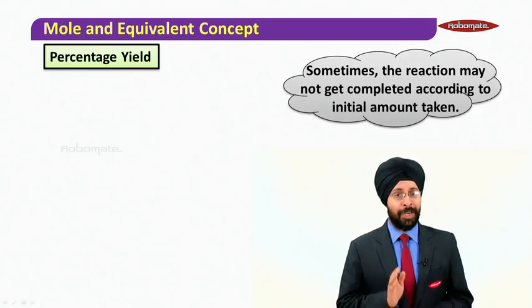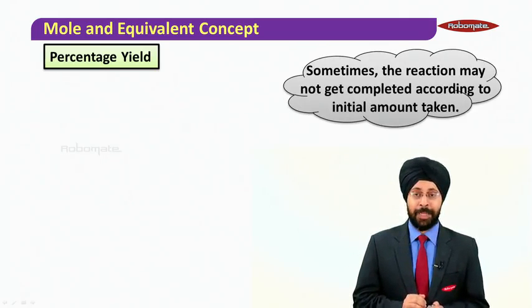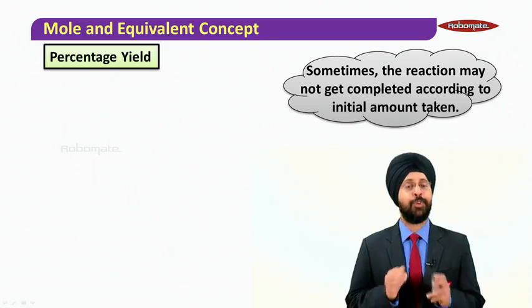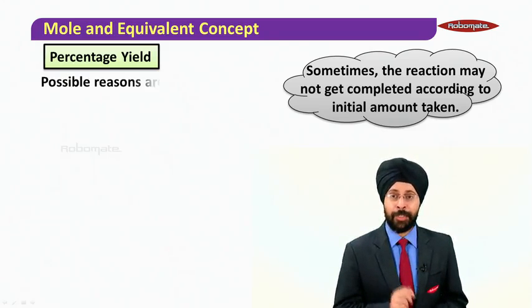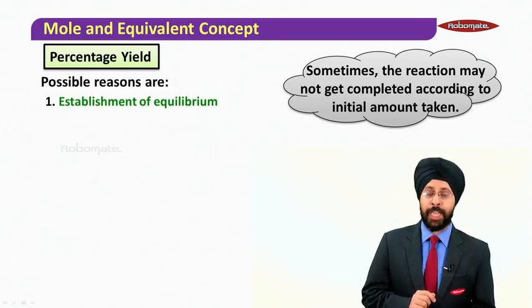Sometimes the reaction may not get completed according to the initial amount taken. What are the possible reasons? The first possible reason is establishment of equilibrium.